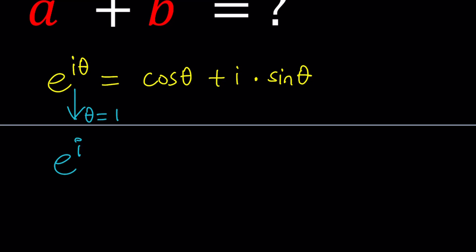Otherwise, is it going to work? That's a good question. But anyways, replace theta with 1, and you're going to get cosine of 1 plus i times sine of 1. Awesome. We got e to the i.